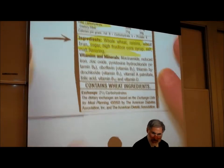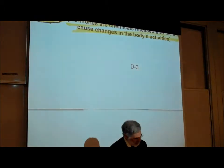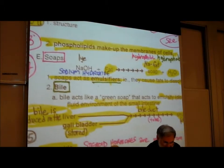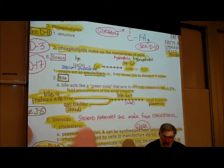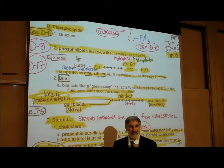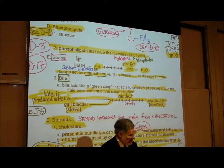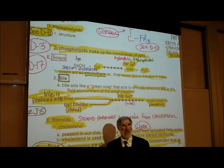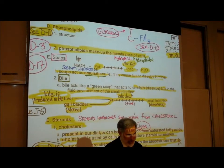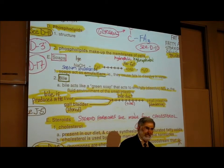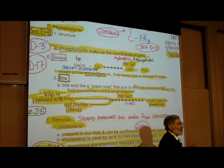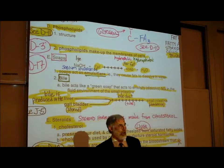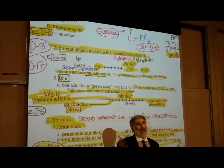We've been explaining what an emulsifier is — anything that allows fats to mix with water. Soap is an emulsifier. Now, most of us have heard of something called bile, that our body makes something called bile. Bile is actually soap — our body actually makes soap. Bile is green in color, so essentially our body makes green soap.